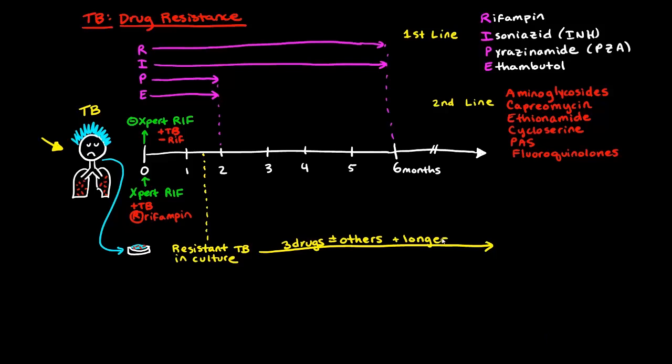If the bugs, the TB, is resistant to both INH and rifampin, the term that is used for that resistance is MDR, which stands for Multiple Drug Resistant TB. And these are becoming increasingly important around the world.